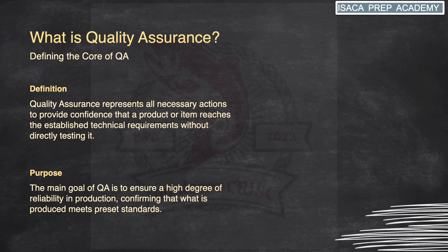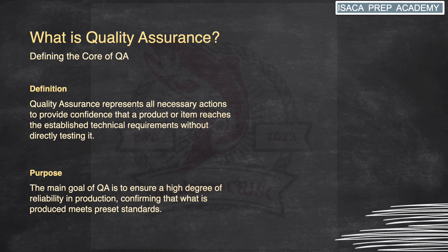By focusing on prevention rather than correction of defects, quality assurance aims to identify and mitigate potential issues early in the production process, thereby minimizing the likelihood of costly rework, recall or customer dissatisfaction. Ultimately, the purpose of quality assurance is to instill confidence in customers and stakeholders that products consistently meet their expectations and deliver value, leading to increased customer satisfaction, loyalty and business success.